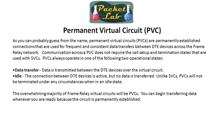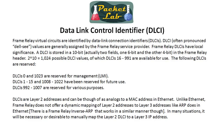The overwhelming majority of frame relay virtual circuits will be PVCs. Data link control identifier — DLCI, pronounced DELSI — is a 10-bit value used as the frame relay address. With 2 to the 10th power, that leaves you with 1,024 possible DLCI values. Of those, only 16 through 991 are currently available for use. DLCI 0 and 1023 are reserved for LMI, which we'll look at in just a bit, and then there are a few others reserved for other purposes.